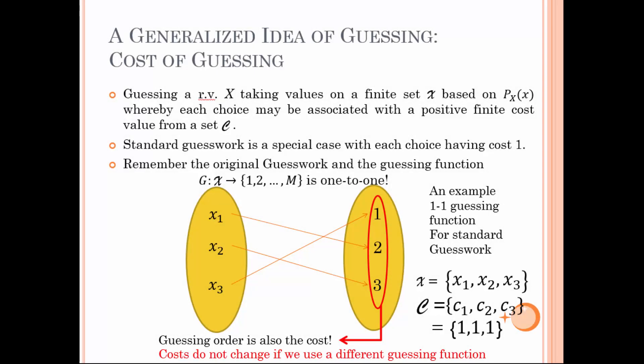Let us formally introduce the cost of guessing as a generalized idea of standard guesswork. Similar to previous intros, we have a random variable X taking values on a finite set X based on a probability distribution p_X, where each choice may be associated with a positive finite cost value chosen from a cost set C. Note that standard guesswork is a special case with each choice having cost value 1. A guessing strategy is a one-to-one mapping that binds the elements of set X with the image set consisting of numbers from 1 to M. The guessing function permutes the ordered set of consecutive integers to minimize a certain criterion such as average number of guesses or average guessing cost.